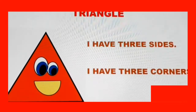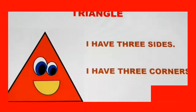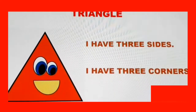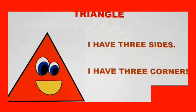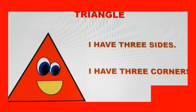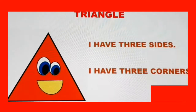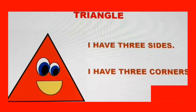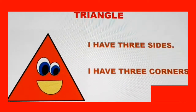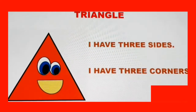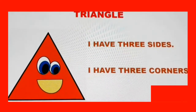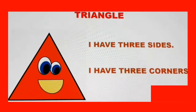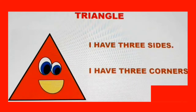A triangle has three sides and three corners. Shall we count three sides first? One, two, three — three sides. And now we will count three corners. One, two, three. So, a triangle has three sides and three corners.